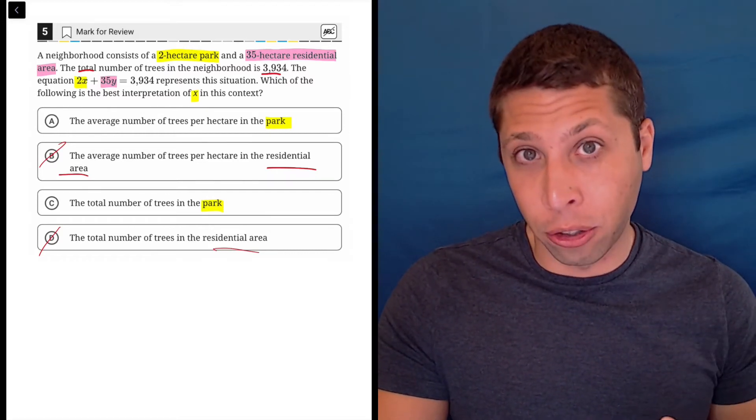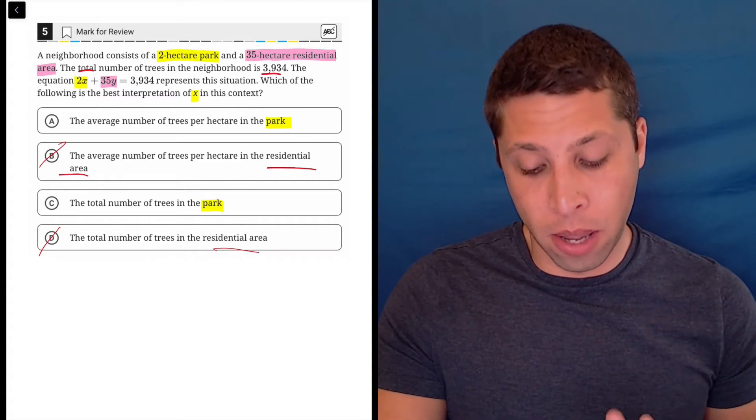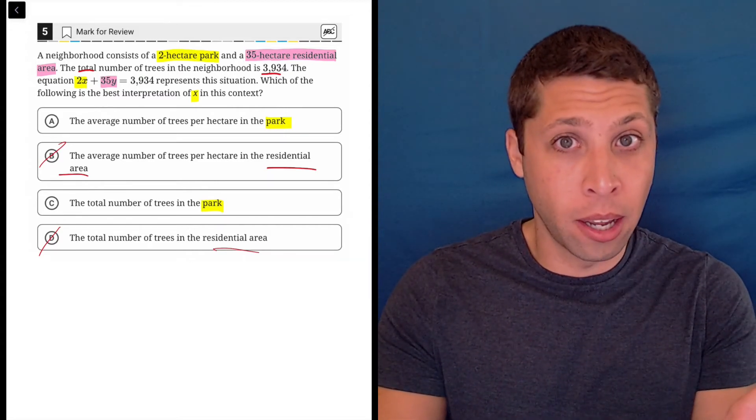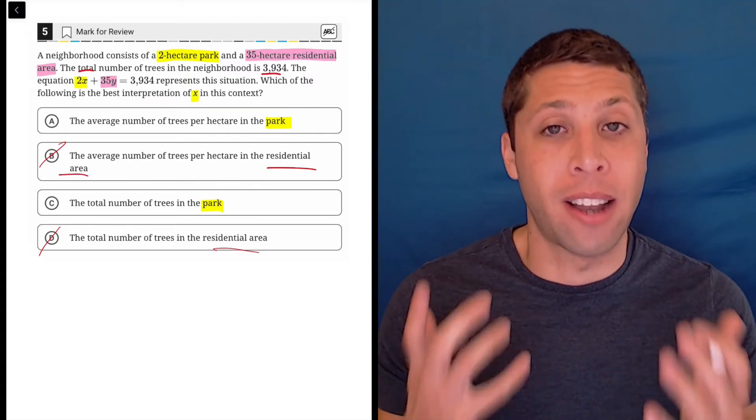Because then why would we multiply that by two, right? The two is the number of hectares. So it's almost like if we did that, we'd have two parks. But if it was the total number of trees in the park, then I would just add that to the total number of trees in the residential area to get my 3934.